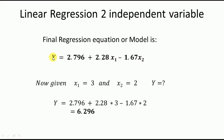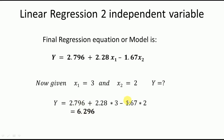The test case gives x1=3 and x2=2. Substituting into the model: y = 2.796 + 2.28×3 − 1.67×2 = 6.296. So the predicted value of the dependent variable y is 6.296 given x1=3 and x2=2.